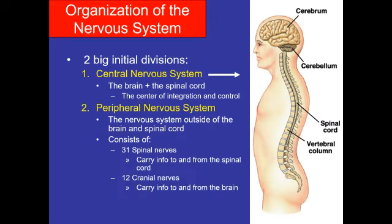Organization of the nervous system: the central nervous system — the brain and spinal cord — is the center of integration and control of all parts of the body. The peripheral nervous system consists of structures outside the brain and spinal cord. It consists of 31 spinal nerves and 12 pairs of cranial nerves. The spinal nerves carry information to and from the spinal cord, and the 12 cranial nerves carry information to and from the brain.